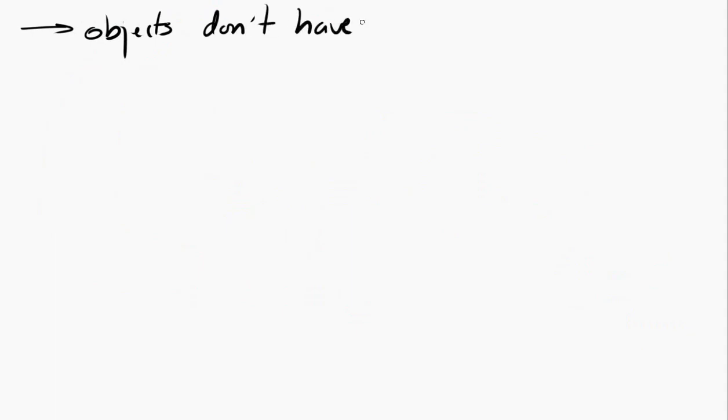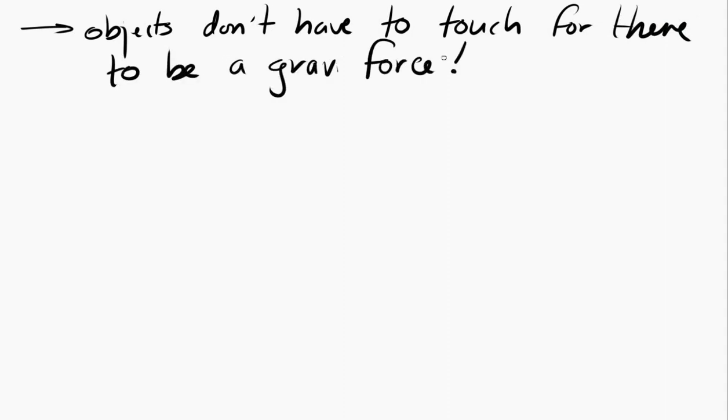So another weird thing about Newton's universal law of gravitation is it doesn't require objects to be in contact. Keep in mind, this is a gravitational force which does not require contact between the two objects. The Earth does not have to be in contact with the Sun for it to exert a force on the Sun. It's a good thing too. I'm glad that the Earth is not in contact with the Sun. Same with the Earth and the Moon or the Sun in the center of the Milky Way. The gravitational force does not require contact.